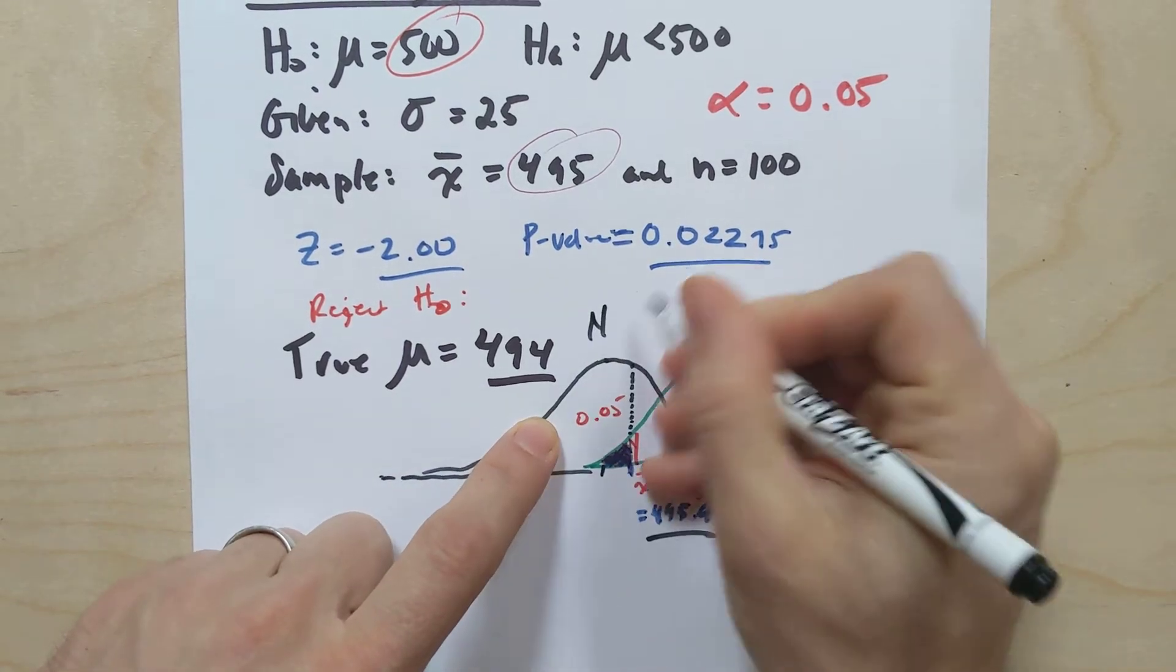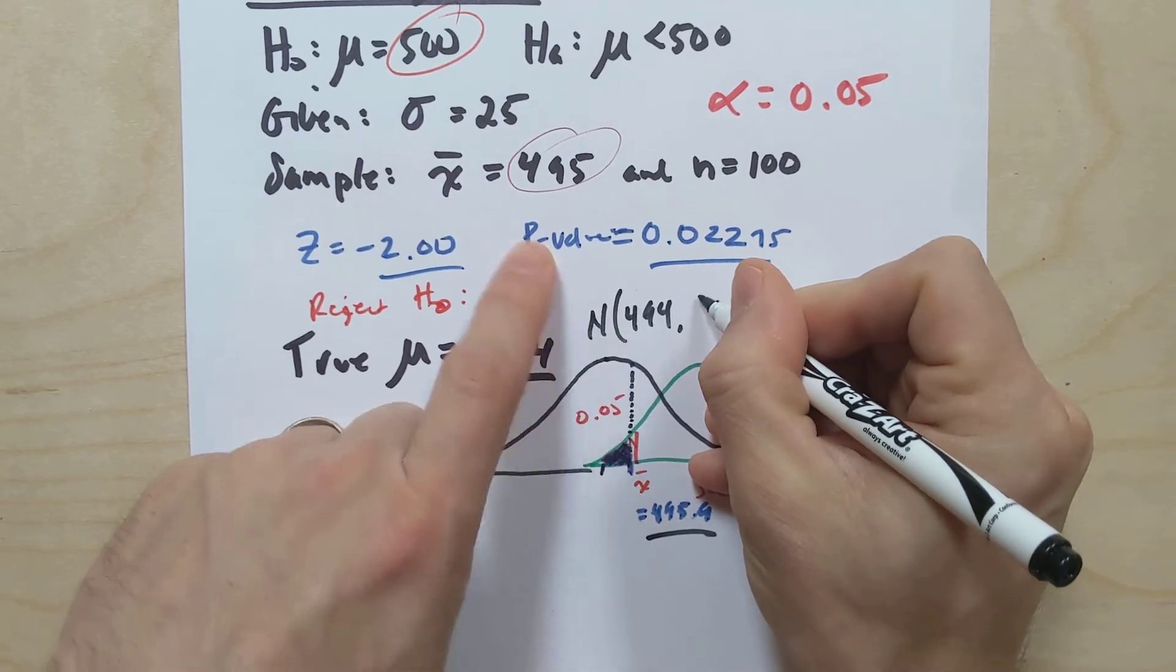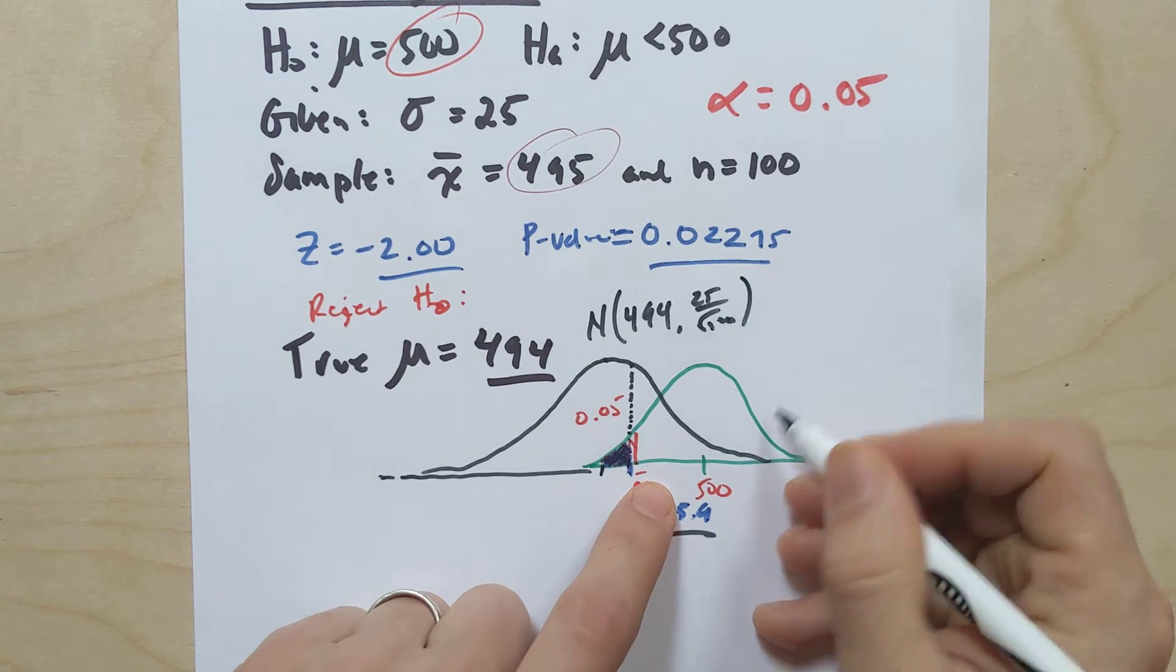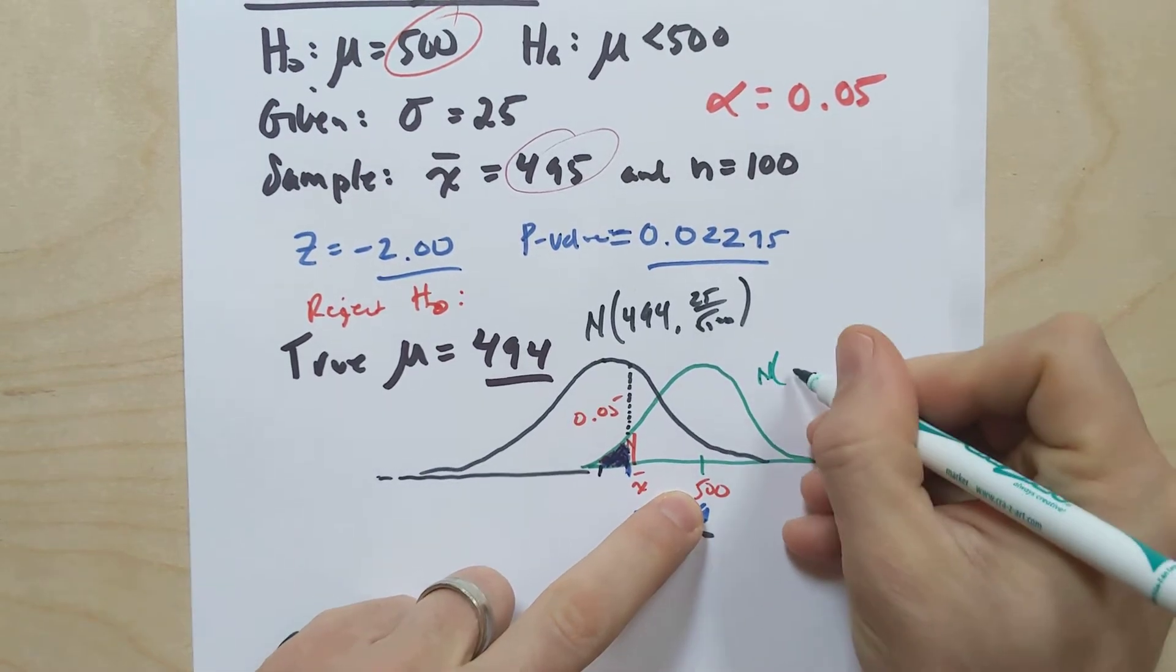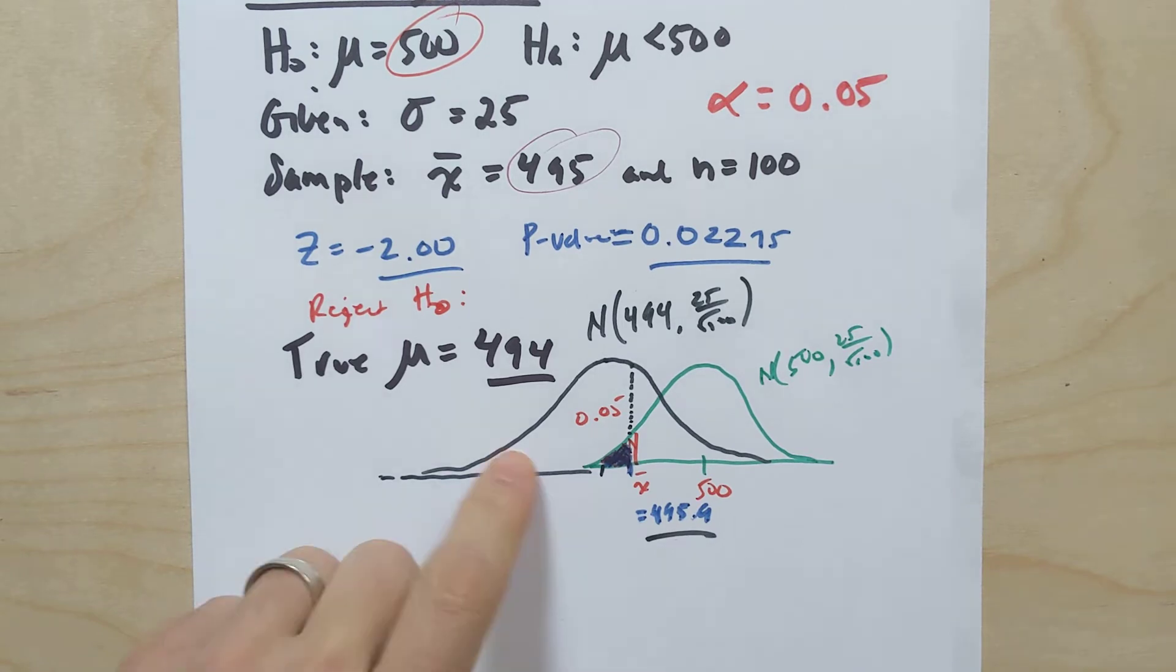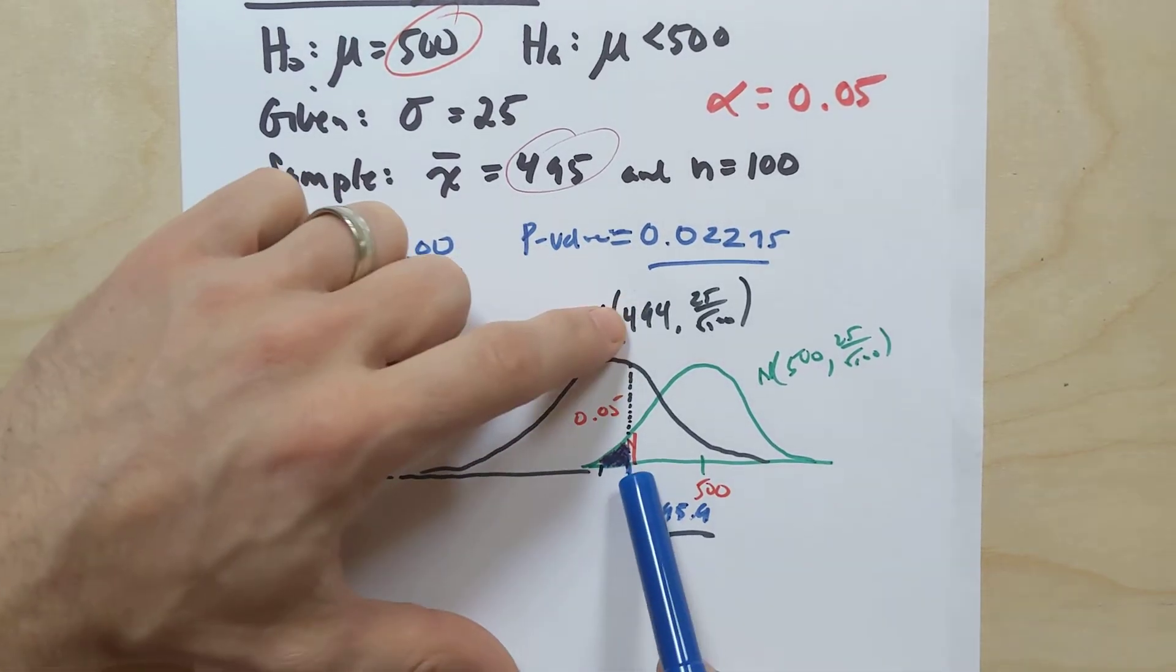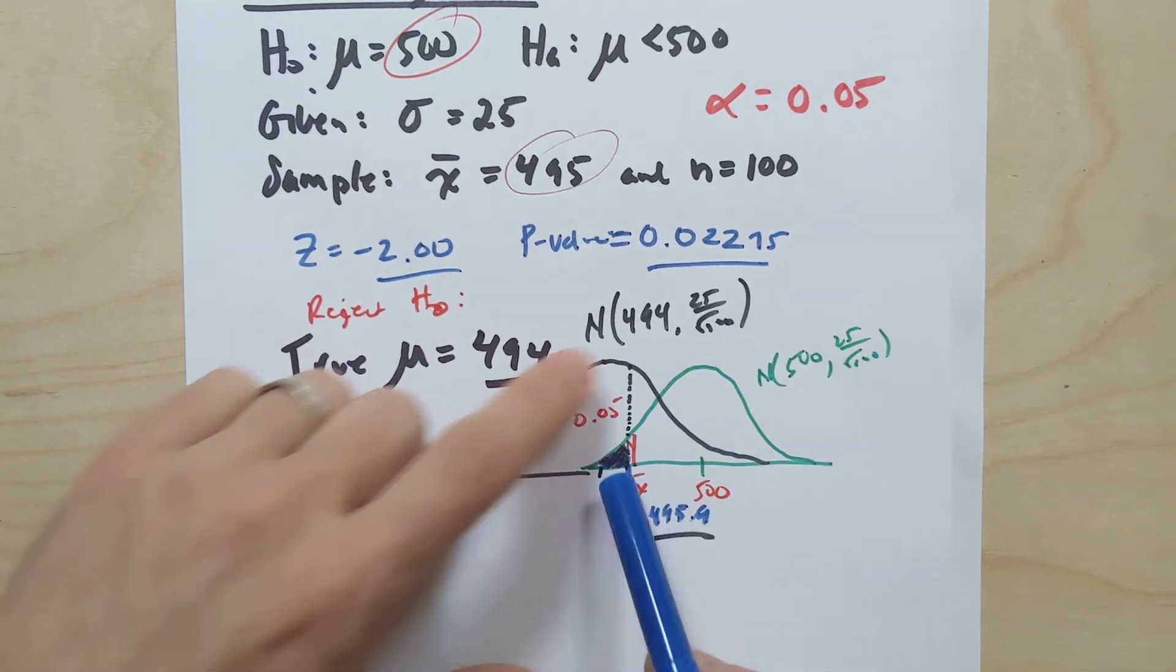I can ignore the green distribution. Now I'm only going to look at this black guy. And this black guy is based on something that has a mean of 494 and a standard deviation of 25 divided by the square root of 100, right? Remember this guy over here, which I'll write in green, it was based on a mean of 500 with the same standard deviation, 25 divided by the square root of 100.